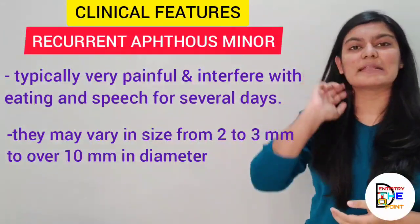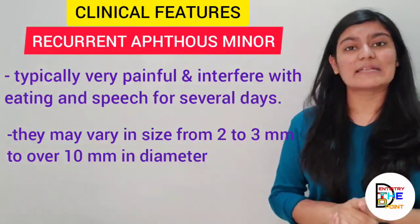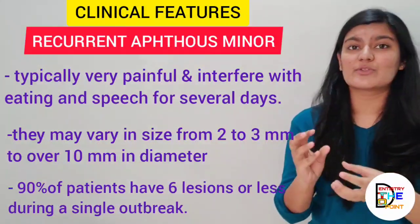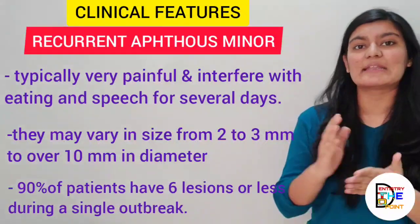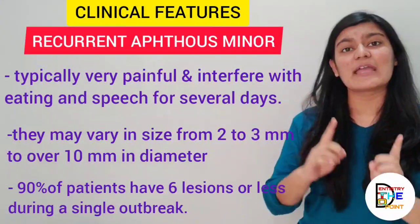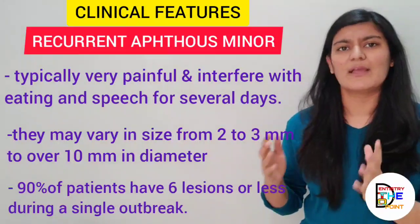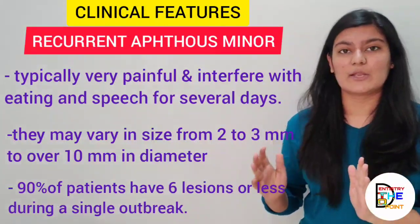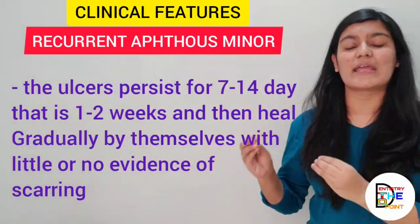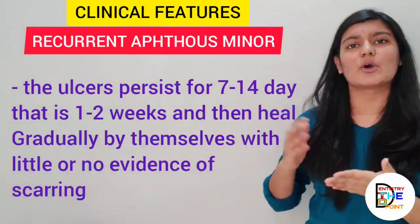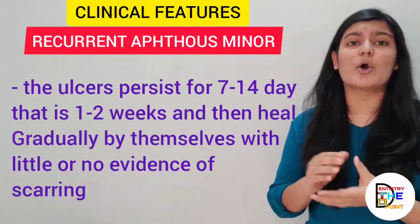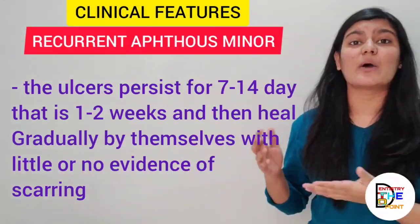The ulcers may vary in size from 2–3 mm to 10 mm in diameter. Studies conclude that 90% of patients with Recurrent Aphthous Minor have six or fewer lesions in a single outbreak. These ulcers persist for about 7 to 14 days — one to two weeks — and they heal by themselves, leaving little or no evidence of scarring, that is, they heal without scarring.